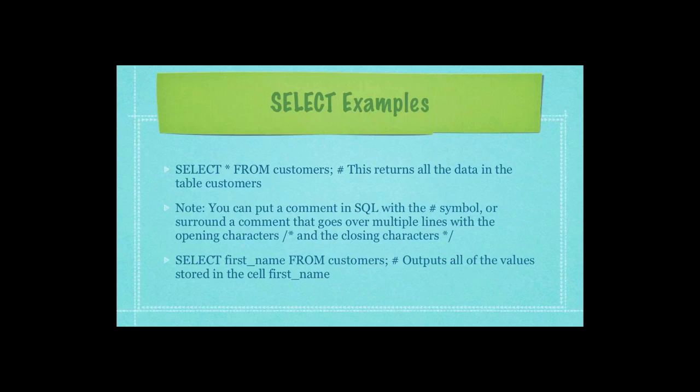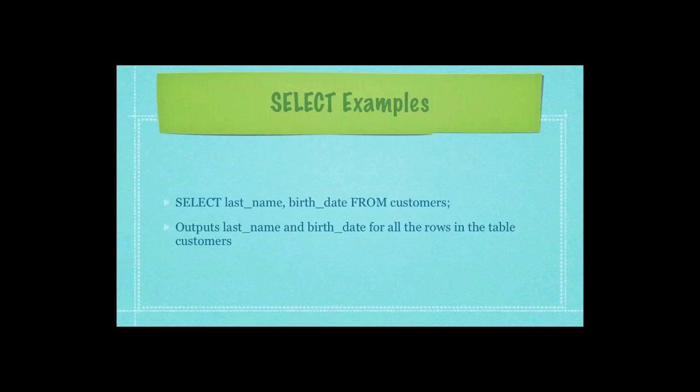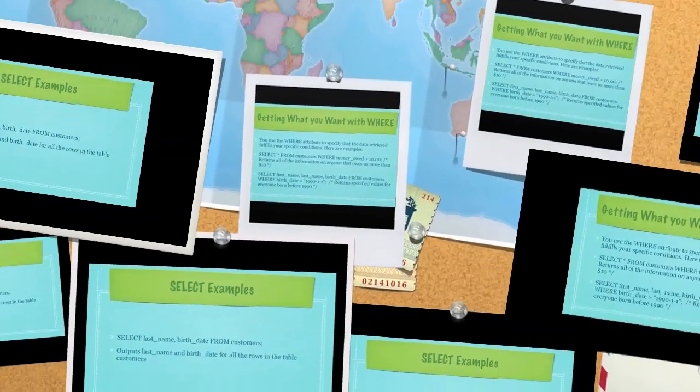Note: you can put a comment in SQL with the number sign symbol, or surround a comment that goes over multiple lines with the opening characters forward-slash star and the closing characters star forward-slash. Here is another select statement — here I'm choosing to select all the first names from the table customers, which will output all the values stored in the first name cell. You can also use the select command to return the last name and birth date from the table customers.